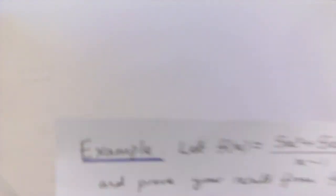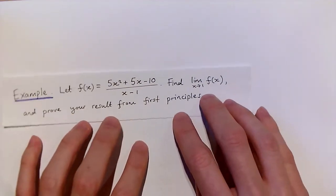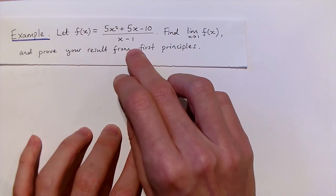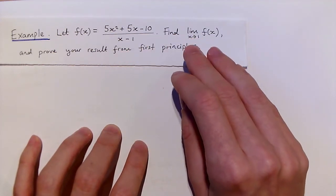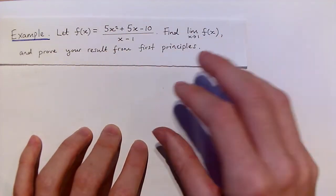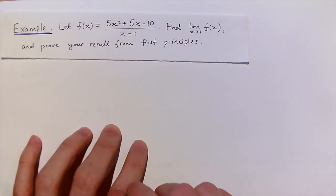Suppose we're asked to think about the function f(x) = (5x² + 5x - 10)/(x - 1), and we're asked to find the limit of f(x) as x approaches 1, proving our result from first principles, that is from the definition of limits that we've just given.